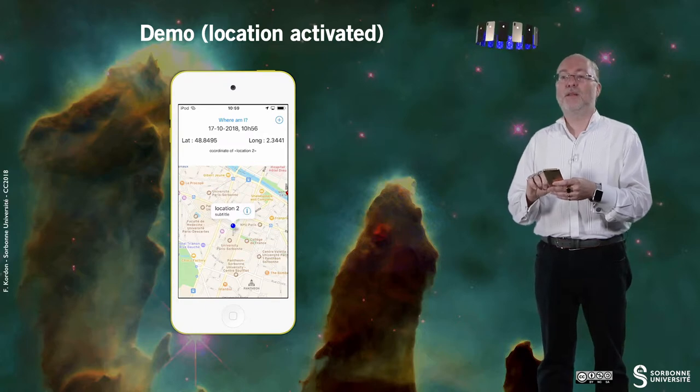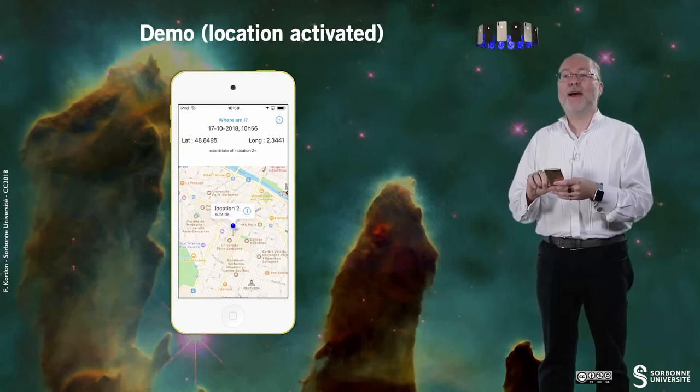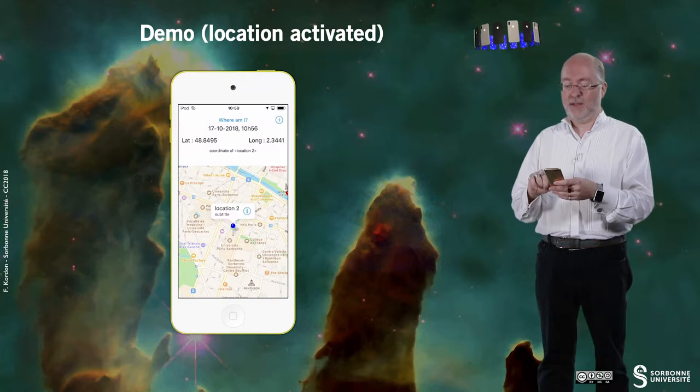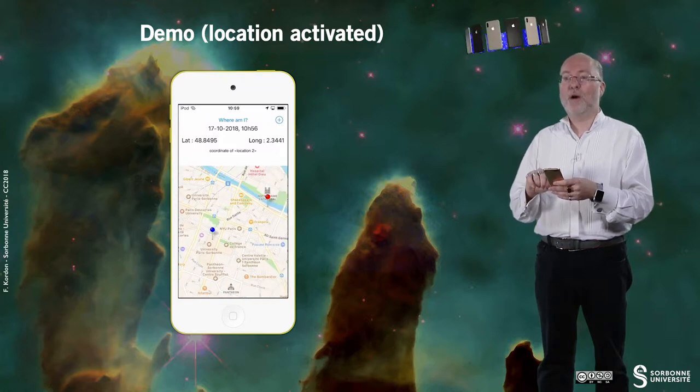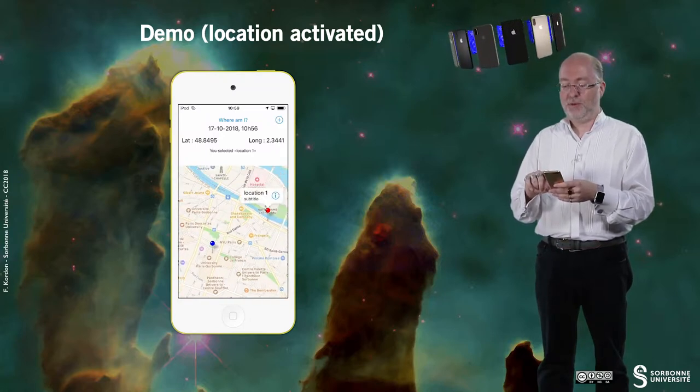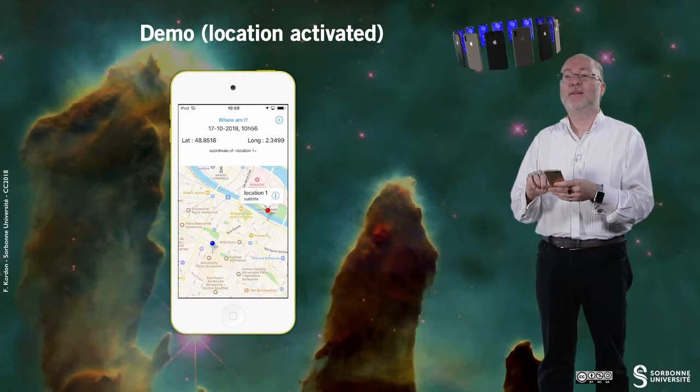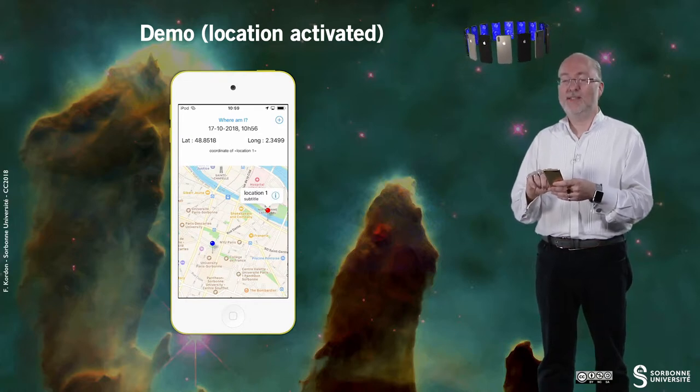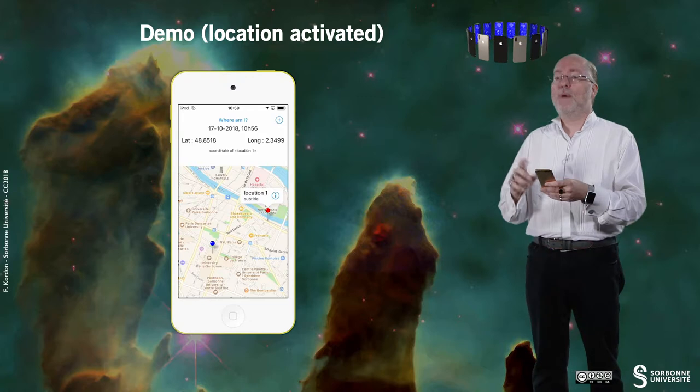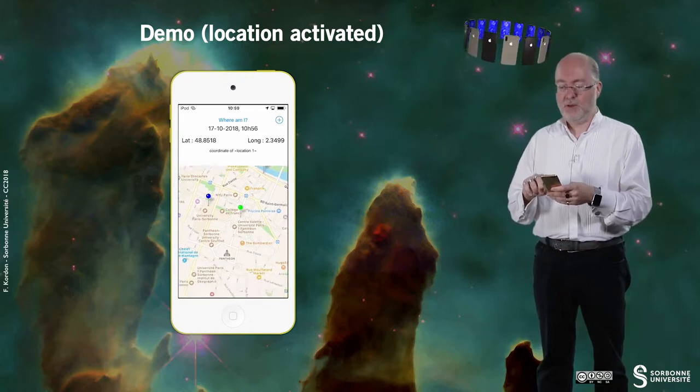And if I tap on the little eye then I update the coordinates. And I can switch from one to another. And then have the coordinates displayed.